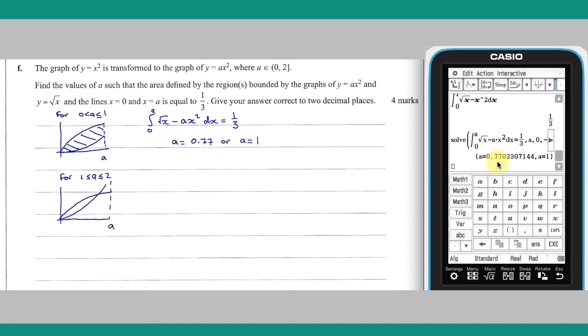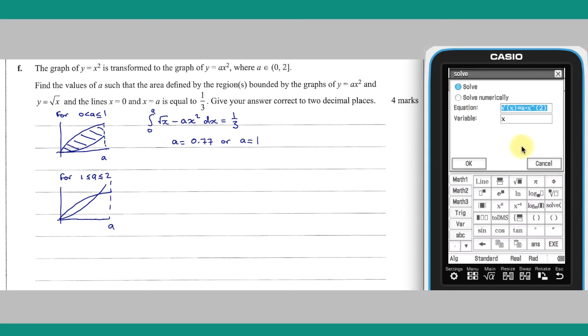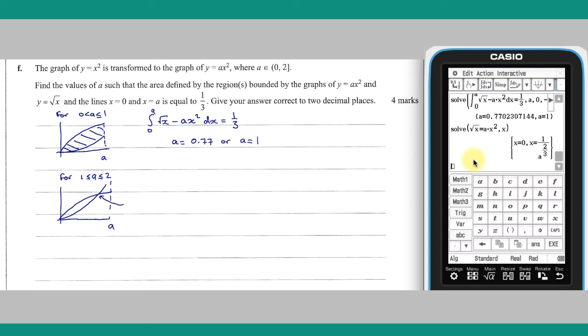To form the definite integral equation corresponding to this diagram, the intersection point of these two functions is needed. The new integral equation will need to account for the fact that the upper and lower bounding functions change either side of the intersection point. The new equation will look like this.